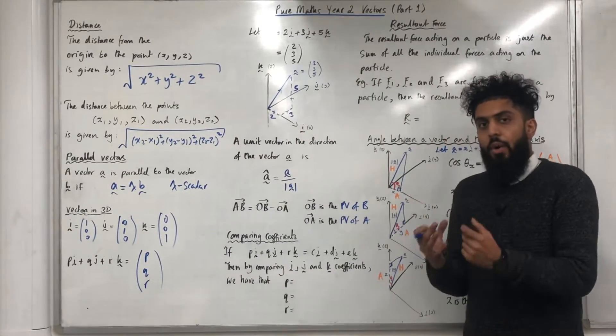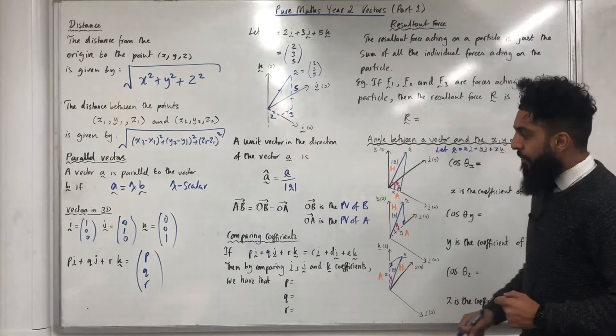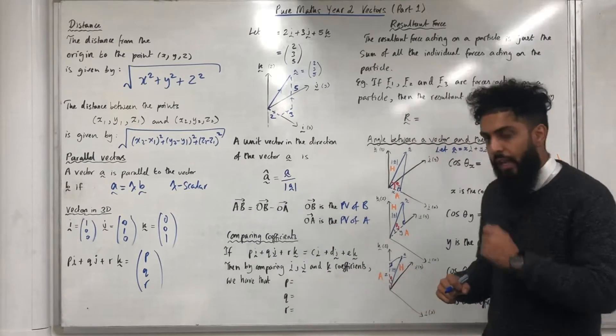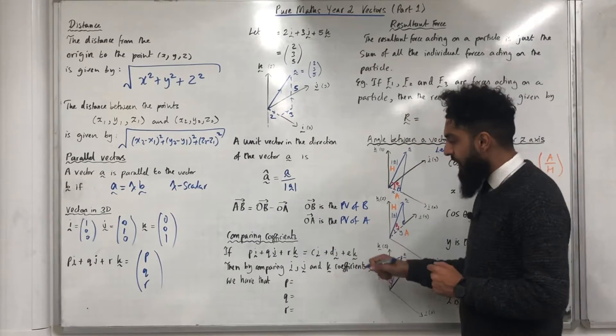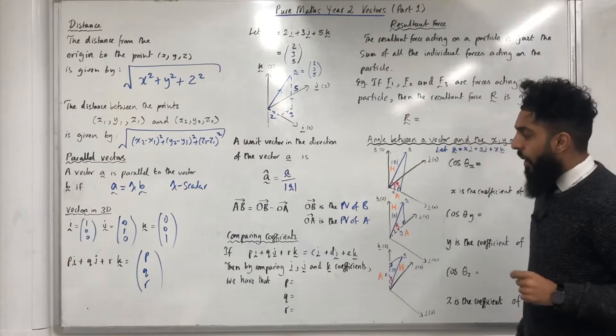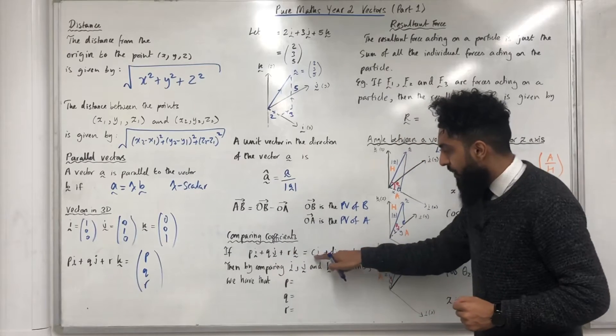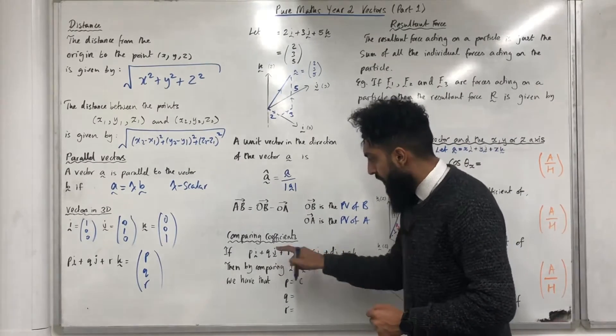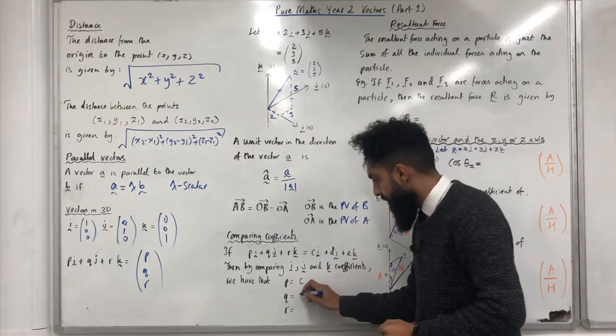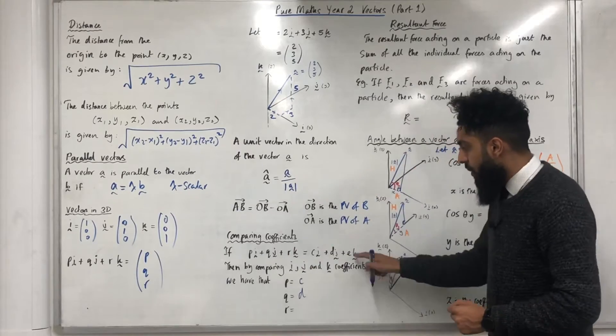Moving on to comparing coefficients. If pi plus qj plus rk is equal to ci plus dj plus ek, then by comparing i, j and k coefficients, we have that p is equal to c, q is equal to d, r is equal to e.